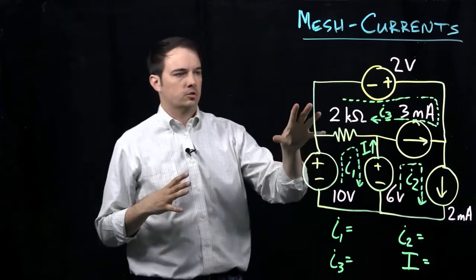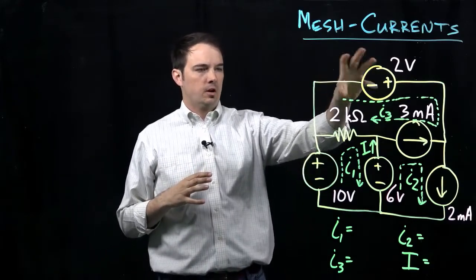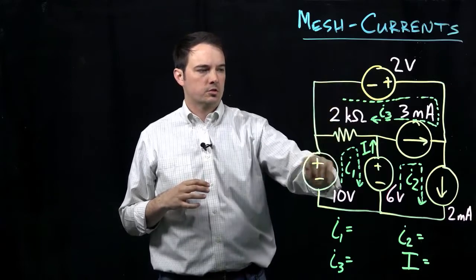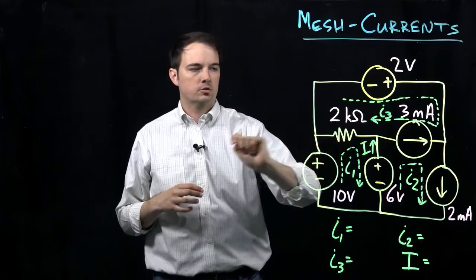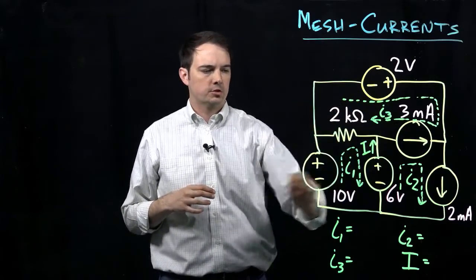Here in this case, we have a circuit composed of a few independent voltage sources, a couple of independent current sources, and a resistor. The values for each of these are given.